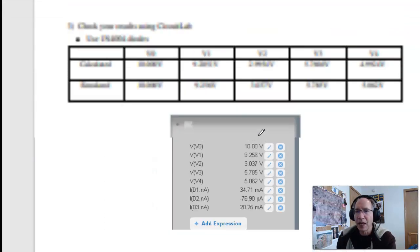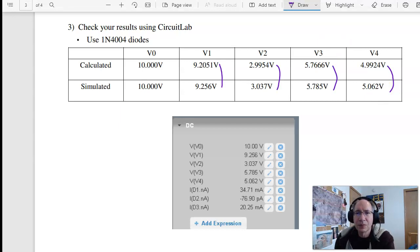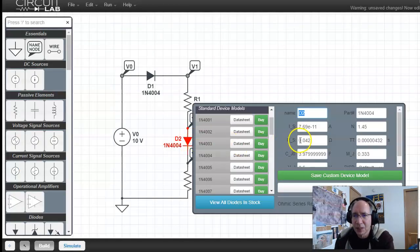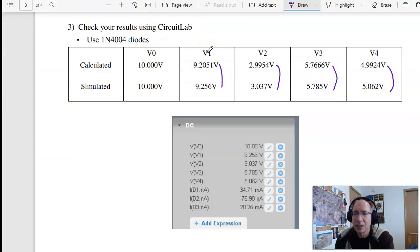And if you compare CircuitLab to what we calculated, they're close. Not exactly the same. And the CircuitLab model includes a couple more parameters, like a series resistance. This also includes a small resistance in series. Some capacitance. A slightly more accurate model. Slightly more complicated model. But they're close.